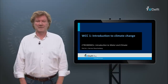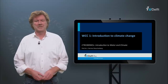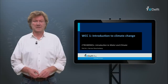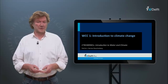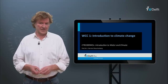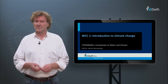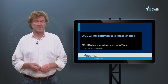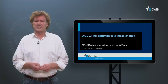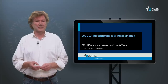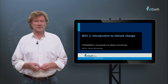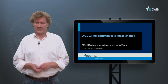Welcome to this video on climate change and the water cycle. My name is Herman Russenberg. My field of expertise is atmospheric remote sensing. I developed methods to measure the properties of clouds and precipitation and their interaction with atmospheric radiation. We do this work to better understand climate change and its consequences for the water cycle on Earth.